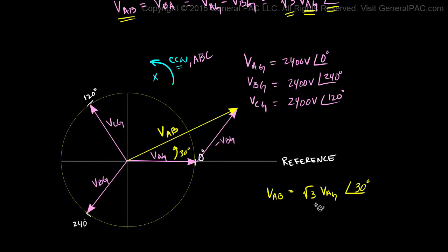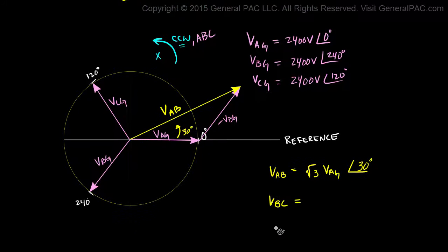So I'm going to extend that same concept to evaluate VBC and VCA. And that's going to look something like this. So this phasor here is negative VCG and this phasor here is VBC.